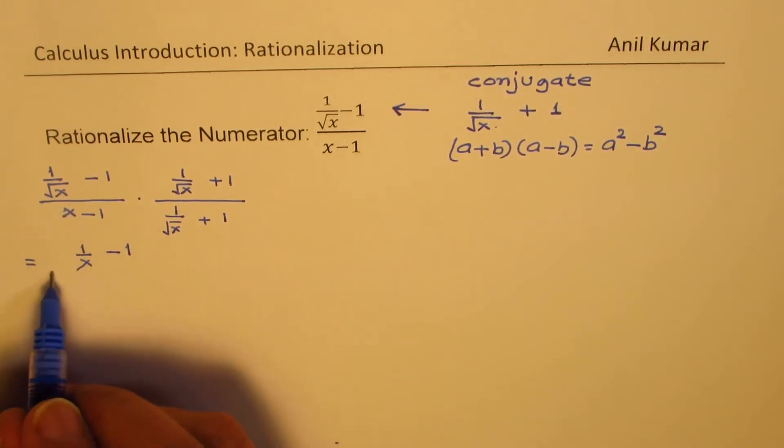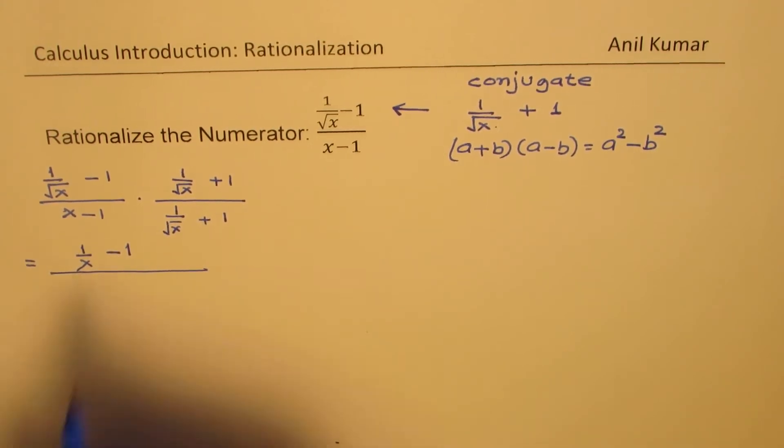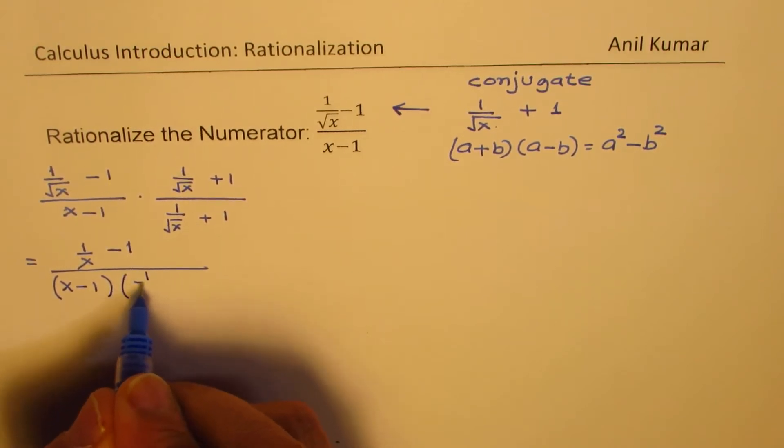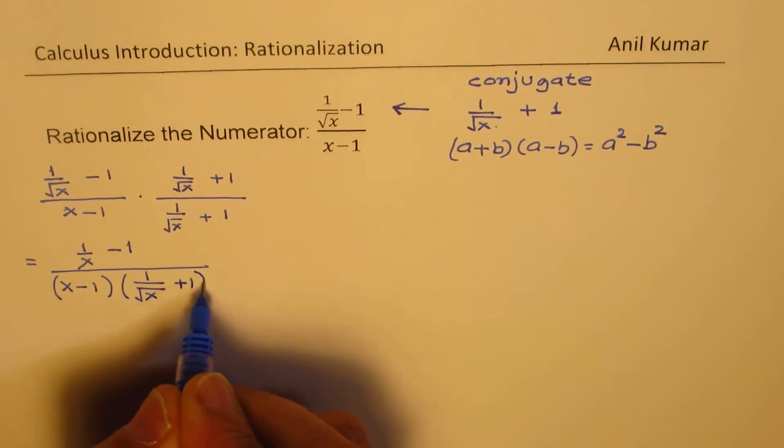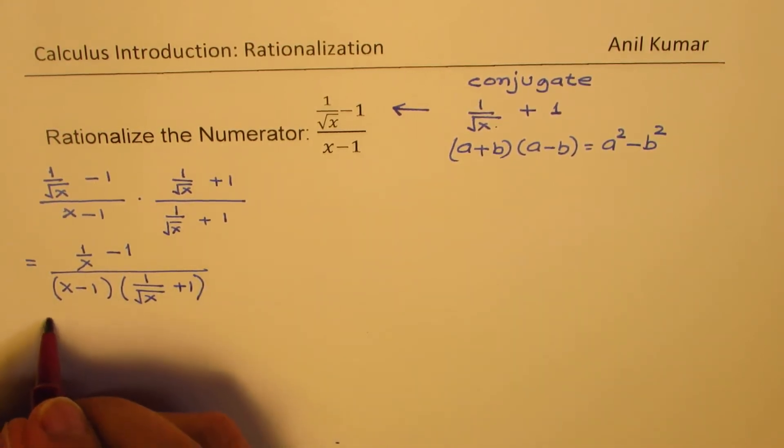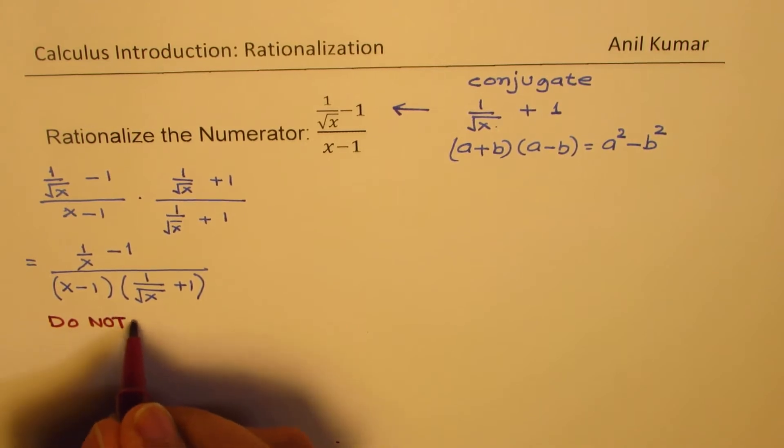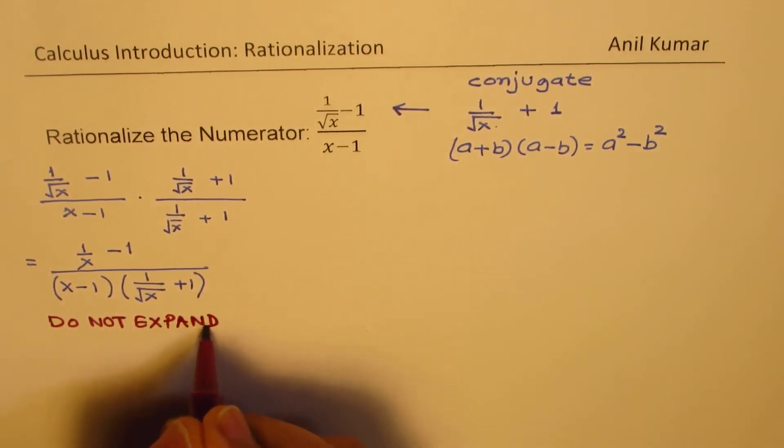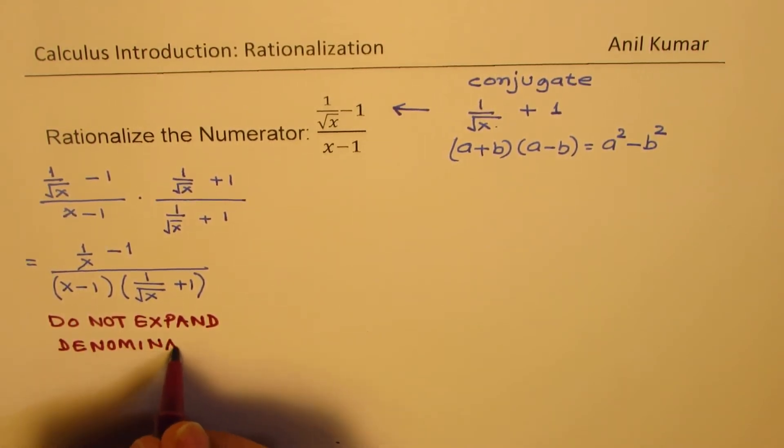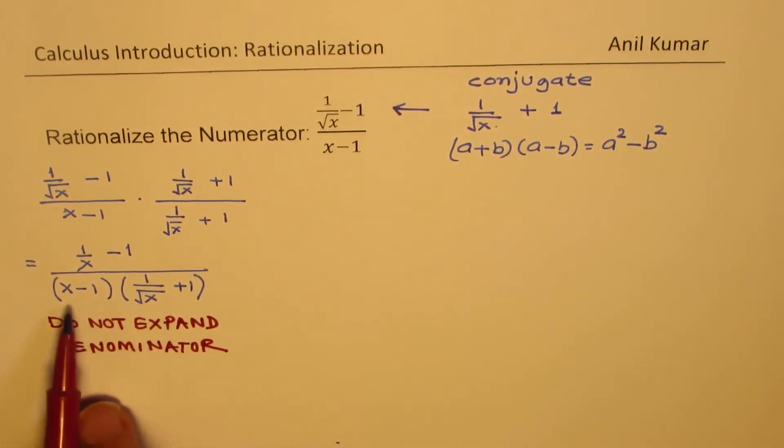Now, in the denominator we have two parts to be multiplied. So we'll write it as x minus 1 times 1 over square root of x plus 1. Now, the word of caution here is that do not expand denominator. If you do that, in that case you are wasting a lot of time and that is not the right process.